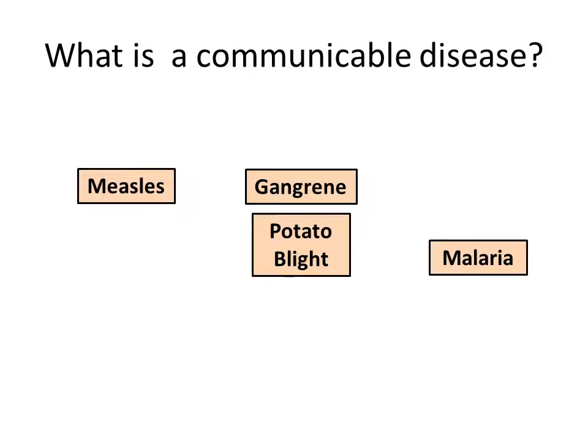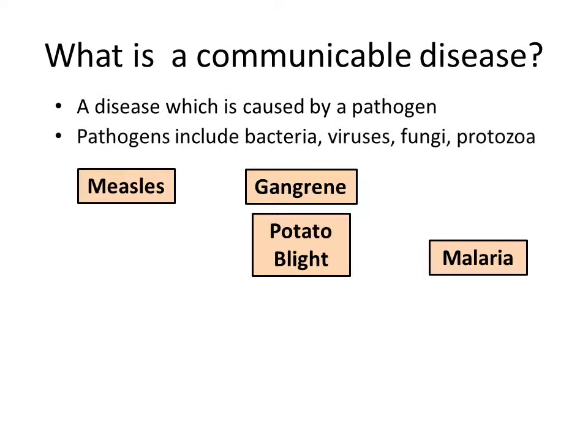A communicable disease is a disease which is caused by a pathogen. A pathogen is just an overall name for any microorganism which makes us unwell. Lots of microorganisms actually don't make us unwell — in fact, lots of recent research has shown that quite a lot of microorganisms are beneficial and necessary for good health, providing us with what we call a microflora. Pathogens include bacteria, viruses, fungi and protozoa, and they're all represented in the list of examples coming up.